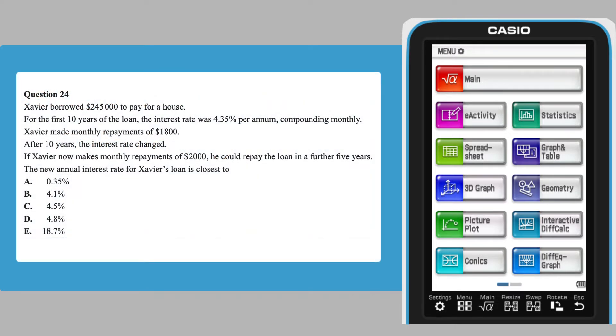This question requires the calculation of the balance of a loan after 10 years before the interest rate for the remaining 5 years can be calculated.